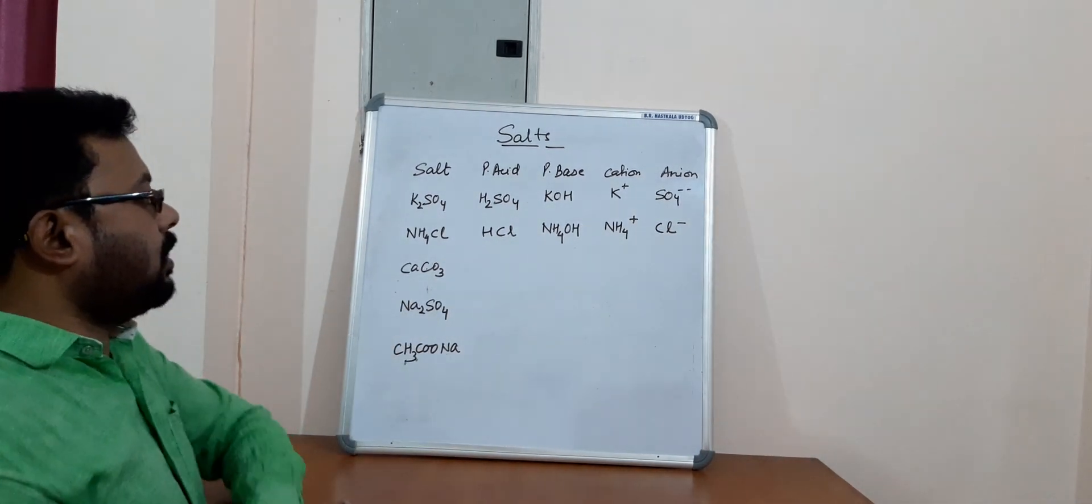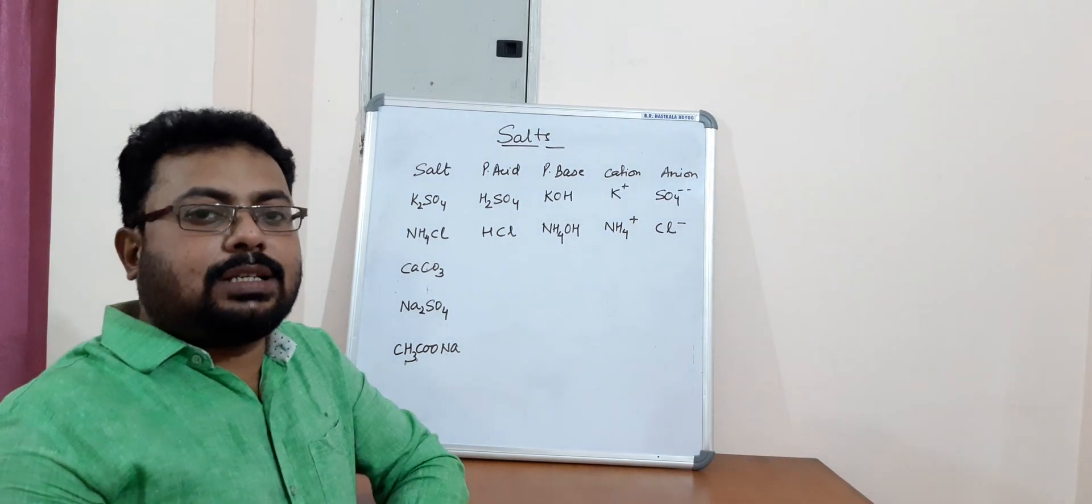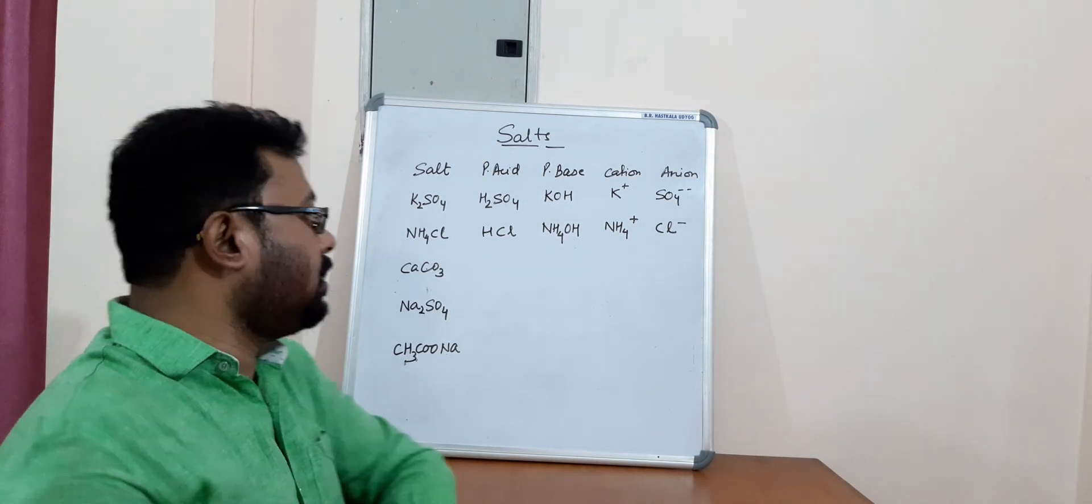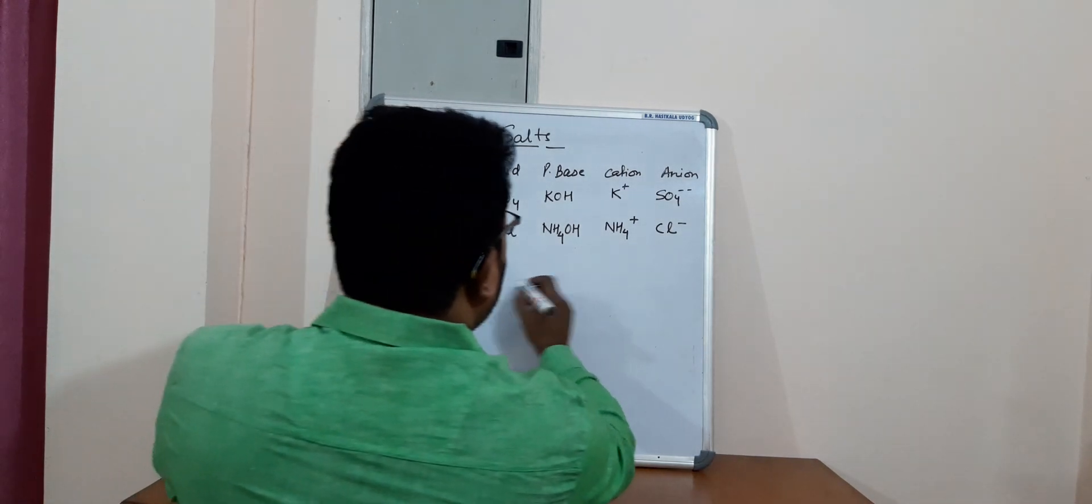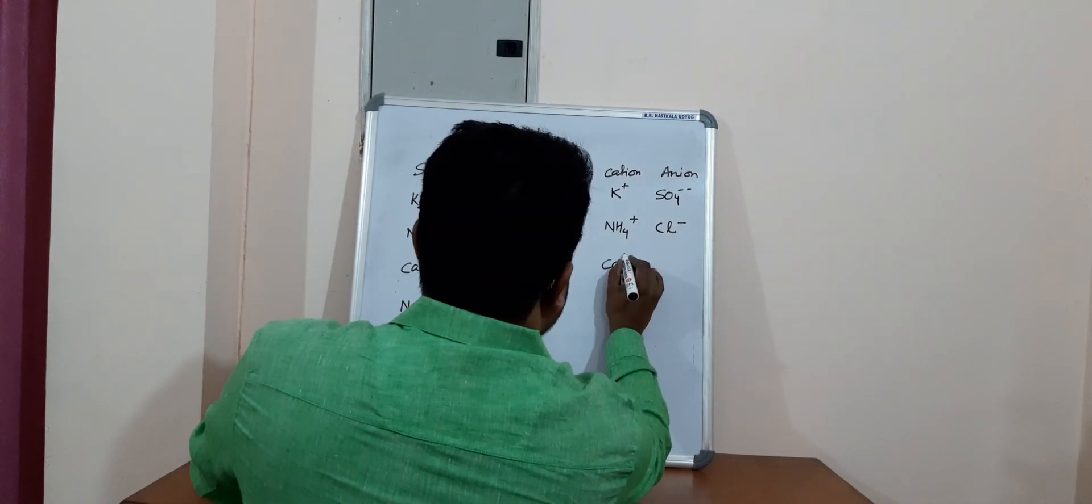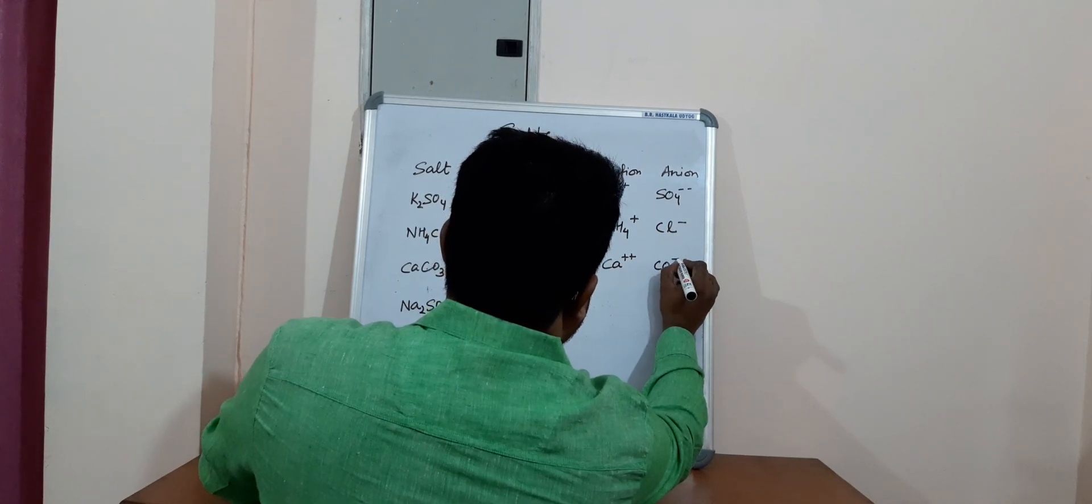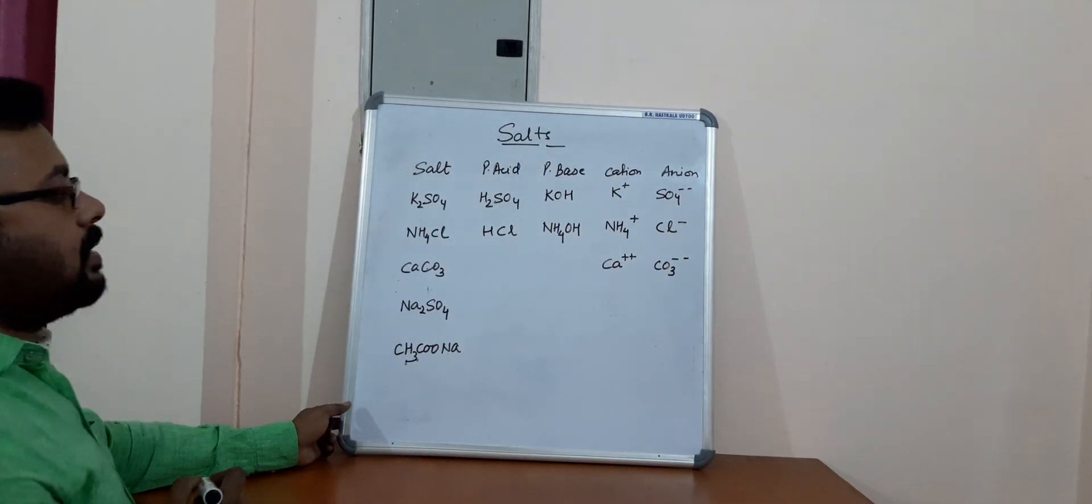Let us come to this third one, that is calcium carbonate. So calcium carbonate. When you look at the cation, you have calcium and carbonate as an anion. Carbonate as an anion.